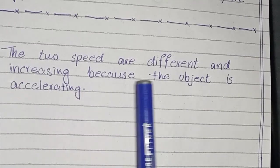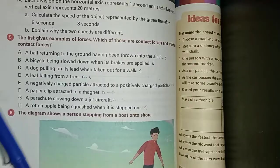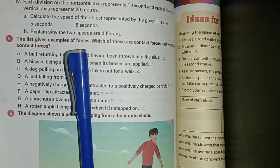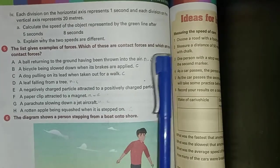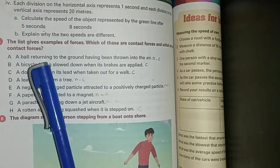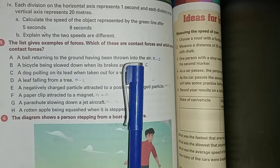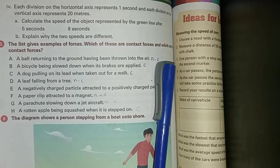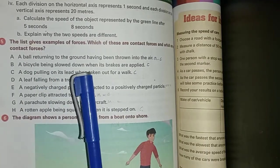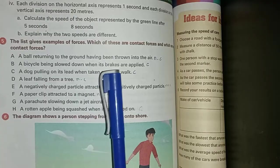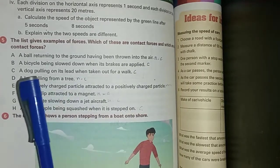The two speeds are different and increasing because the object is accelerating. Fifth question: the list gives examples of forces. Which of these are contact forces and which are non-contact forces? A ball returning to the ground having been thrown into the air - non-contact force. A bicycle being slowed down when its brakes are applied - contact force. A dog pulling on its lead when taken out for a walk - contact force.